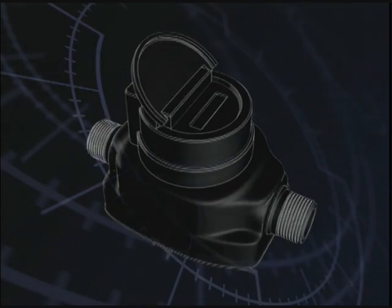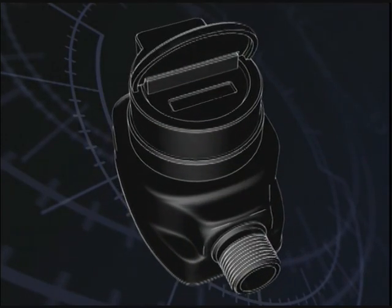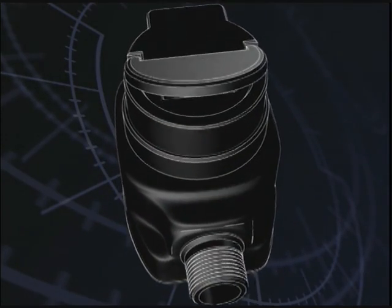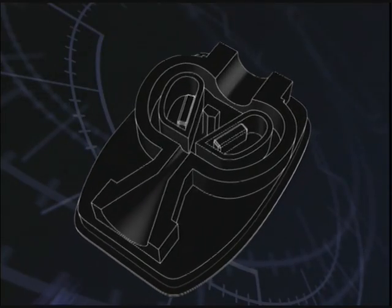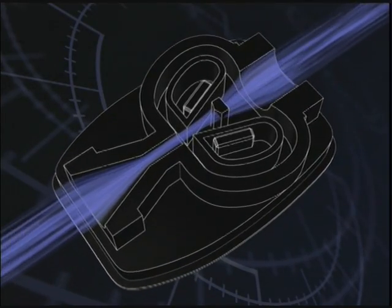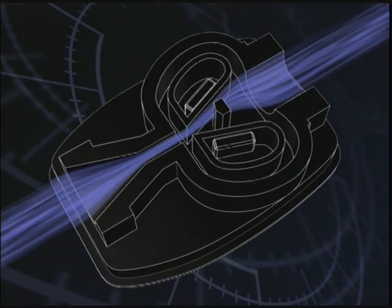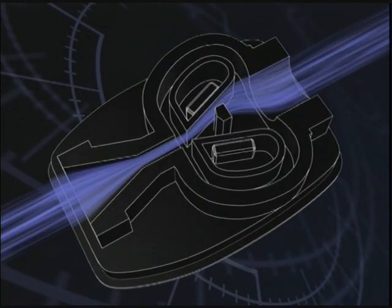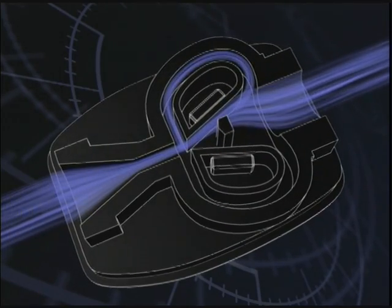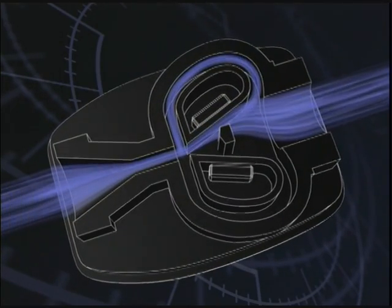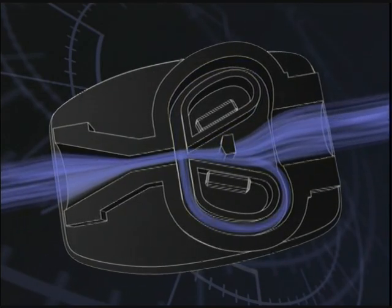Another type of small residential meter, recently introduced, is the fluidic oscillator meter. In these meters, water enters through a nozzle and forms a jet. This jet of water is drawn to one of the two diffuser walls as it passes through the flow chamber. A small portion of water is passed through the feedback channel and causes the incoming jet to flip to the other side of the chamber, where the process is repeated.